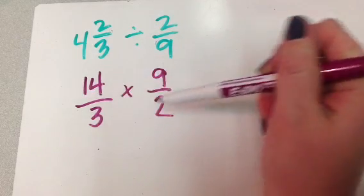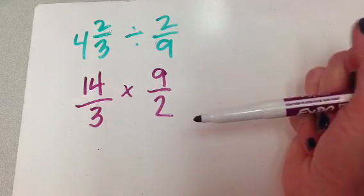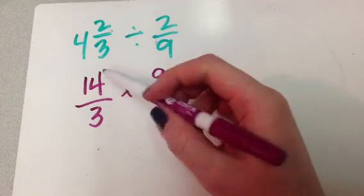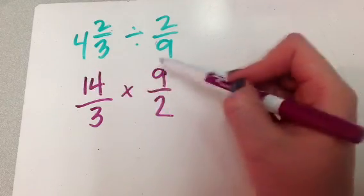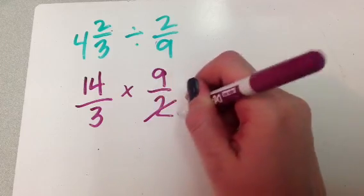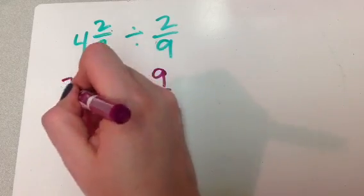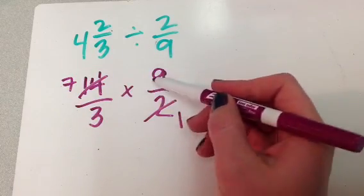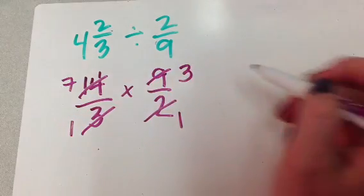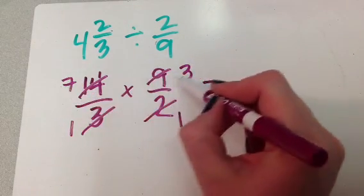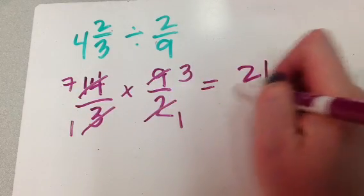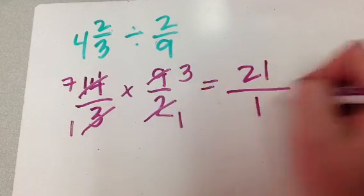And so again, at this point, I can cross cancel anything I want to, right? Well, in this case, both of these numbers are factors of the numbers up top. So 2 is a factor of 14, so I can divide 2 out of both of these guys. 3 is a factor of 9, so I can divide 3 out of both of these guys. And then I just multiply my new numbers, right? 7 times 3, 21.